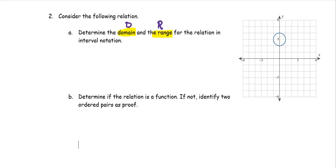For this graph, the x-values go anywhere from negative 1 to positive 1, and the y-values go anywhere from positive 2 to positive 4. In interval notation, the domain is the interval from negative 1 to 1, inclusive, and the range is the interval from positive 2 to positive 4, inclusive.